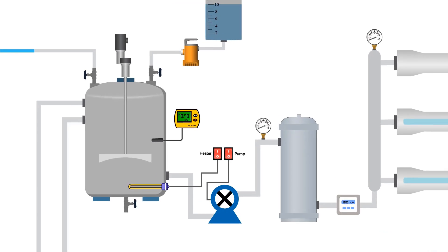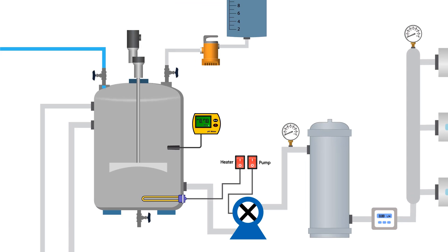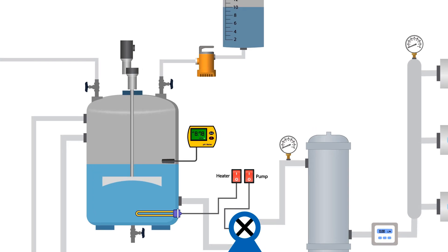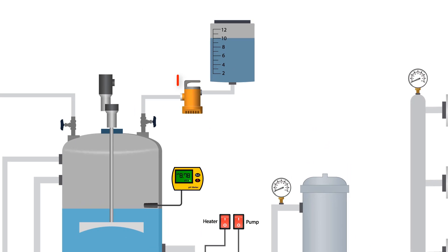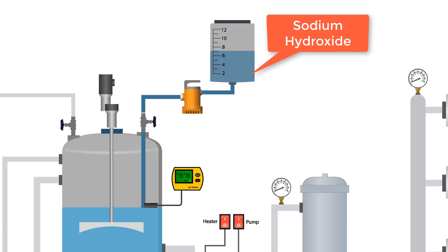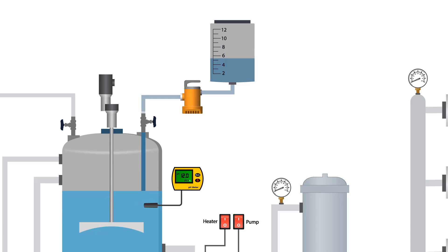Alkaline Treatment. Fill the mixer tank with the required amount of distilled water. Turn on the pump and add an appropriate quantity of sodium hydroxide to the mixer tank to achieve a pH of 12.